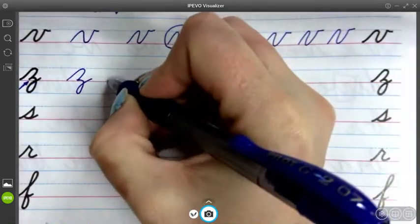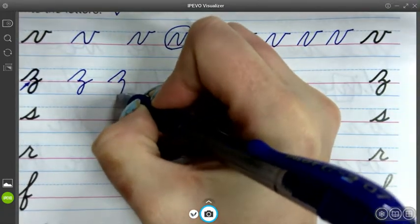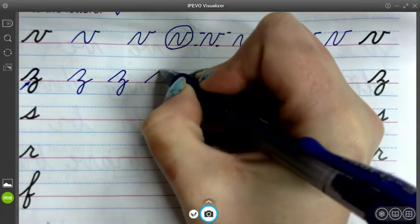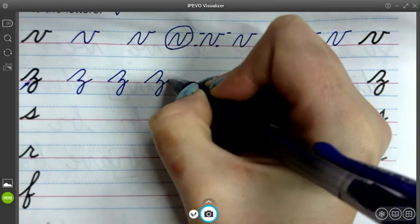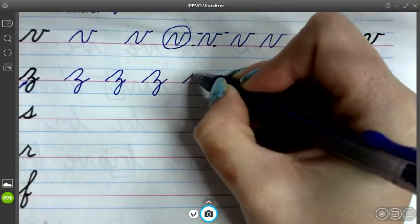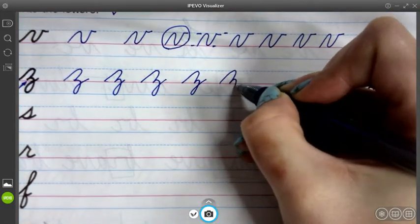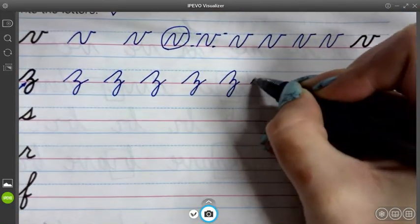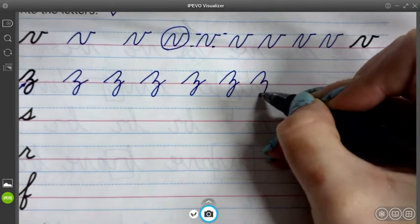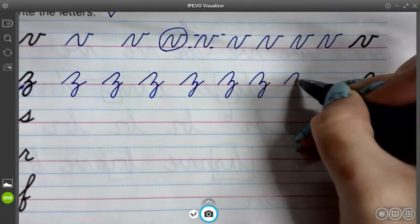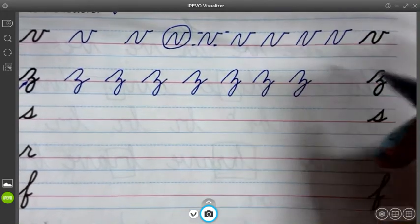And then our loop goes all the way down to the bottom blue line. If you mess one up, just erase it and try again. Remember, you can always retrace the beginning black letter if that helps you remember the shape you need to make.